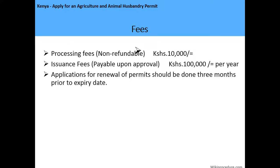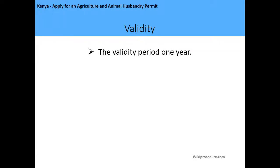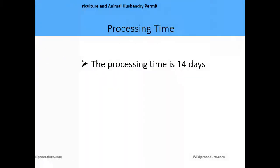The processing fee is 10,000 Kenyan shillings and the issuance fee is 100,000 shillings per year. Applications for renewal of the permit should be done three months prior to the expiry date — we have a video for how you can renew the permit. The validity period is one year and the processing time is 14 days.